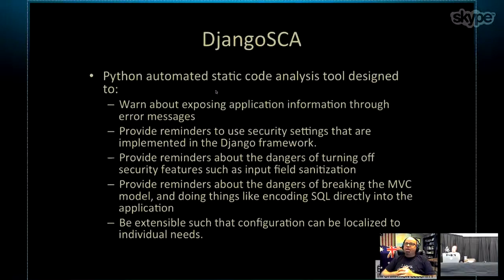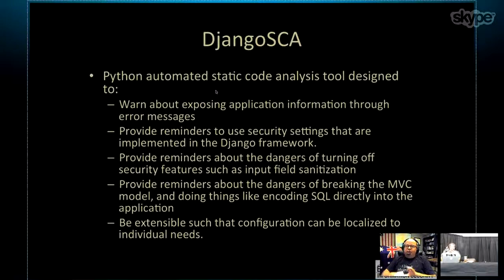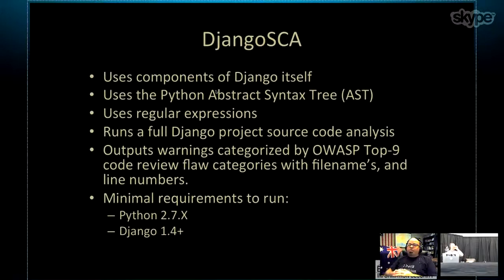Moving on to Django SCA: it is an automated static code analysis tool designed specifically to warn about exposing application information through error messages, provide reminders to use appropriate security settings in a Django project, warn about the dangers of turning off specific security features — input sanitization is particularly egregious in this area — provide reminders about the dangers of breaking the MVC paradigm and encoding SQL directly into the application, and give flexibility and extensibility so configuration can be localized to individual needs.